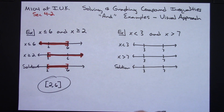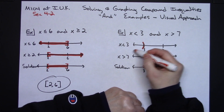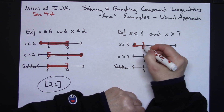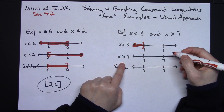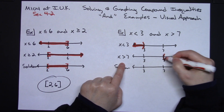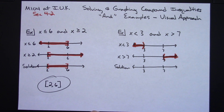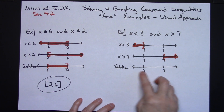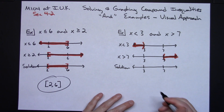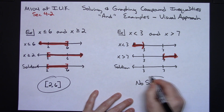For x is less than 3: 3 will not be a solution, so I use a curvy bracket, and numbers less than 3 are shaded to the left. For x is greater than 7: 7 will not be a solution, curvy bracket, and I shade to the right. Now I ask what part overlapped — and nothing overlapped. There are no parts that are shaded on both number lines, so there is nothing on the solution number line. This one turns out to be no solution because there were no overlapping parts.